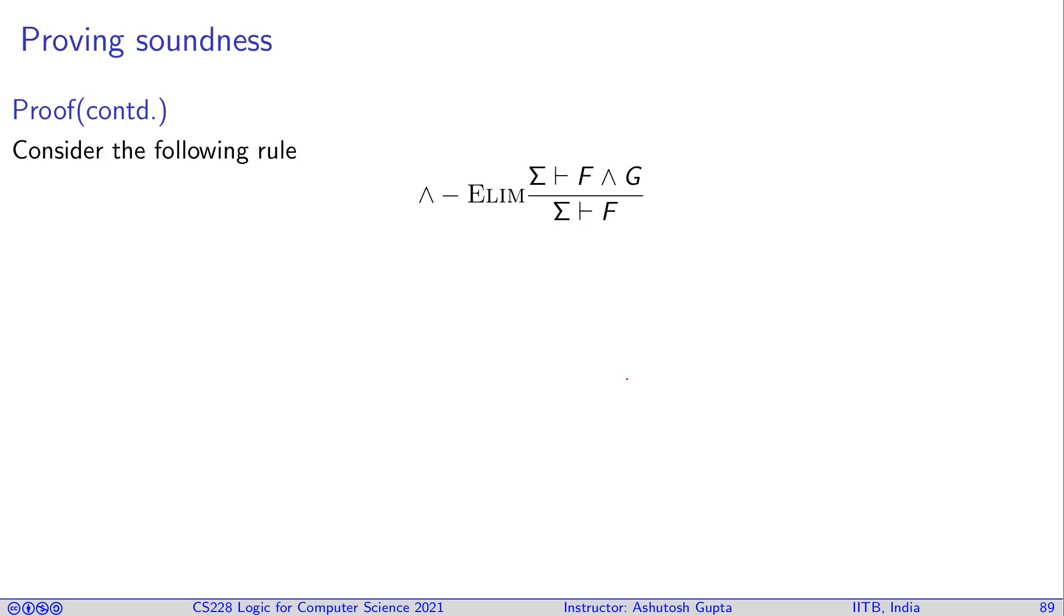So let's look at one rule. We assume that this thing implies this thing. Now we need to show that this implies this. So how do we do that? Let's assume a model m that satisfies sigma. By the induction hypothesis, m must also satisfy this guy.